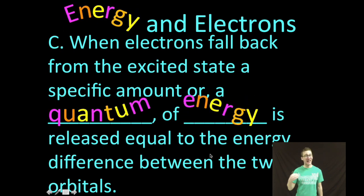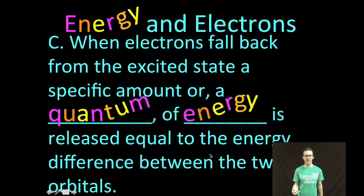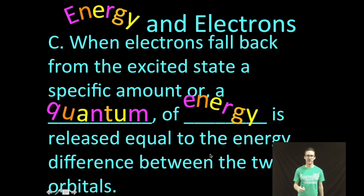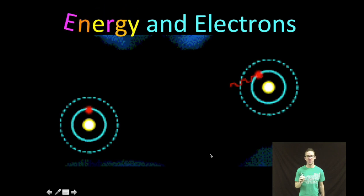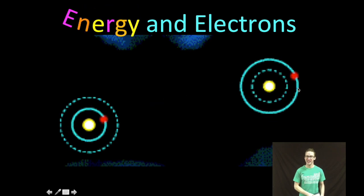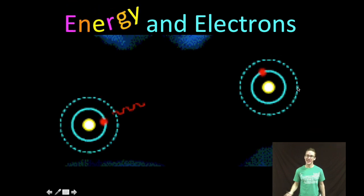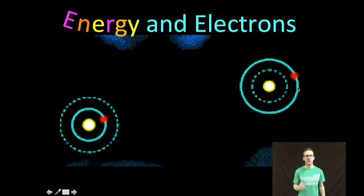when electrons fall back from the excited state, a specific amount or quantum of energy is released that is equal to the energy difference between the two orbitals or levels. As you continue to be mesmerized by this thrilling animation, notice that once in the excited state, as it falls back to the ground state, it gives that energy off. And again, the energy is exactly equal to the difference between the two energy levels.